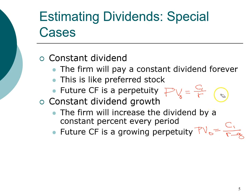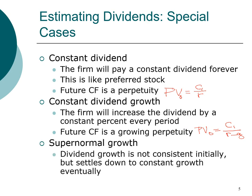So we have two special cases: the constant dividend, where the dividend doesn't change, and the constant dividend growth, where the dividend changes but the growth rate of the dividend does not change. The last case is called the supernormal growth model. In this case, we assume the dividend growth rate is not constant initially but eventually settles down to a constant growth rate. This last model is more of a framework rather than an assumption, and the good news is we can use it to evaluate any stock.